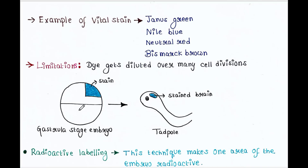Here is the embryo — we apply the stain, and after some time the tadpole shows a stained brain. That means this part of the embryo forms the brain of the tadpole.